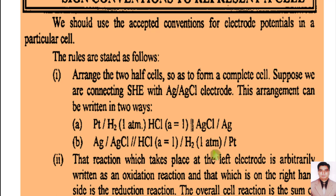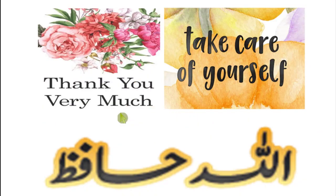Here we have arbitrarily decided that the reaction taking place at the left electrode is written as the oxidation reaction, and the reaction taking place at the right electrode is the reduction reaction. So the overall cell reaction will be the sum of the two electrode reactions: the oxidation reaction and the reduction reaction. Dear students, thank you very much. Take care of yourself. Allah Hafiz.